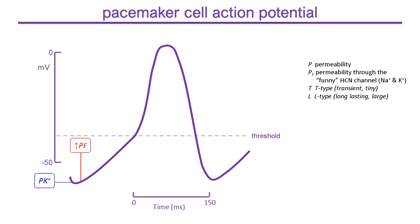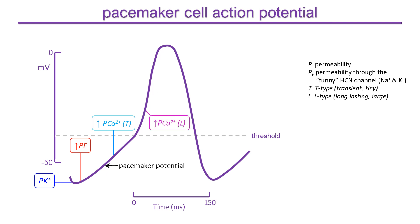The HCN channel has unique properties that specialise it for pacemaking. It is activated by membrane hyperpolarization and it depolarizes the membrane. The depolarization in turn activates T-type calcium channels, which continue to depolarize the membrane while also closing the funny channels. The funny channels and T-type channels therefore work together to generate a pacemaker potential. The depolarization eventually reaches a threshold for opening L-type calcium channels, which mediate the upstroke of the action potential. Depolarization also activates potassium channels, which oppose depolarization and eventually overcome the effect of calcium current to repolarize the membrane back to the level that activates HCN channels, and the cycle begins again.